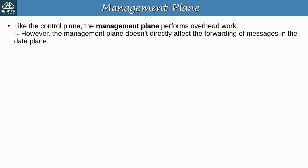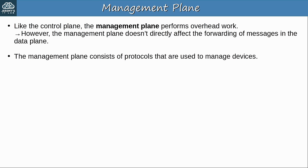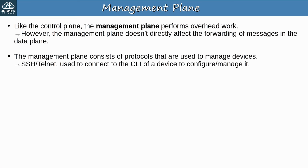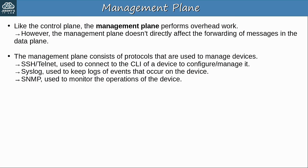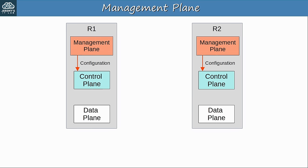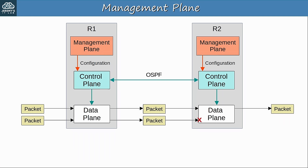Finally, let's look at the management plane. Like the control plane, the management plane performs overhead work. However, the management plane doesn't directly affect the forwarding of messages in the data plane. Instead, it consists of protocols used to manage devices — for example, SSH and Telnet, which are used to connect to the CLI of a device to configure and manage it; Syslog, which keeps logs of events; SNMP, which monitors operations and status; and NTP, which maintains accurate time on the device. A network engineer uses SSH to connect to the routers and configure OSPF, and now the control planes of the routers use OSPF to exchange routing information, which then determines how packets are forwarded in the data plane.